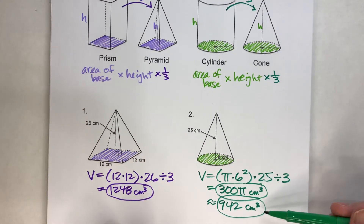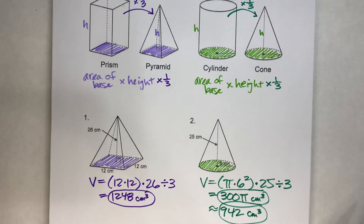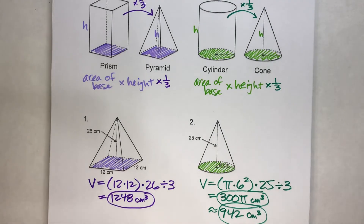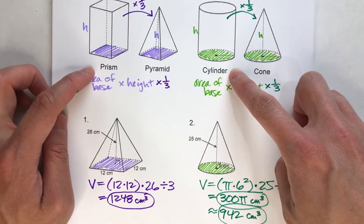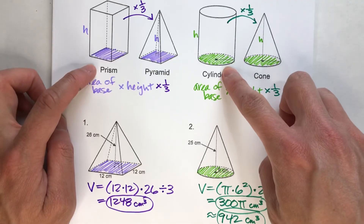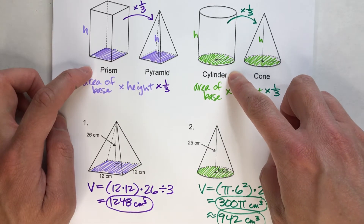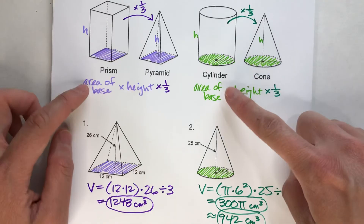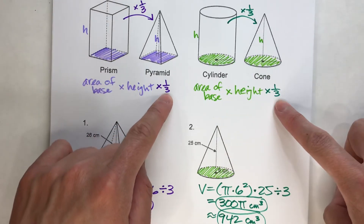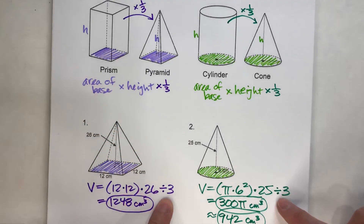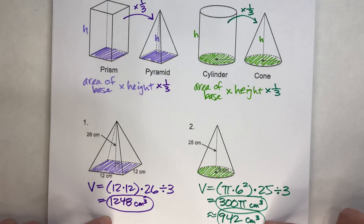300π cm³ is the exact answer and 942 cm³ is the approximate answer. The key to finding the volume of pyramids and cones is picturing prisms and cylinders. Once you find the volume of those, you just multiply by one third or divide by three — it means the same thing. That one extra step gives you the volume of the pyramid or cone.